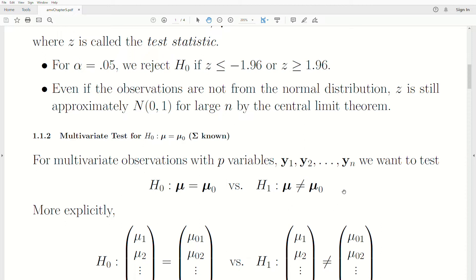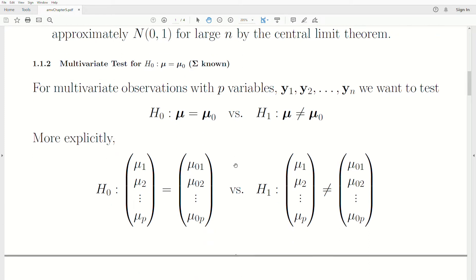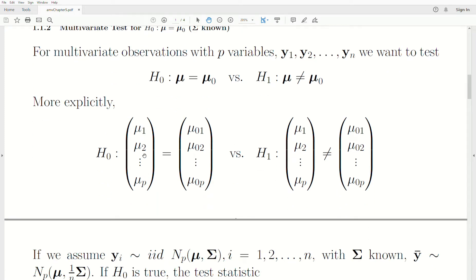So that's one of the downsides of this test. If we reject, we just know somewhere there's a difference. We don't necessarily know which one. And we'll, of course, dabble with that in later videos. So more explicitly, the null hypothesis is that the mean vector is some value, some constant vector, or it's not.